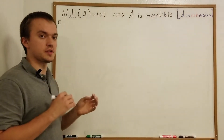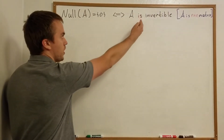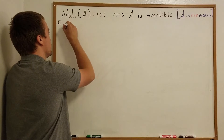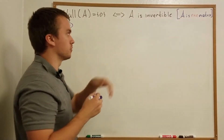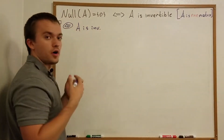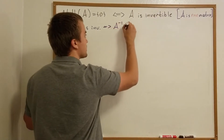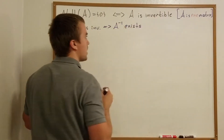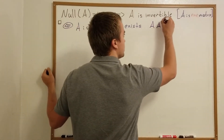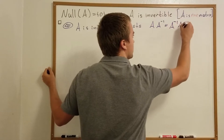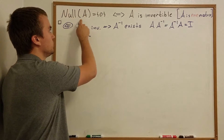Which direction do you think is easier? I think that direction is going to be easier, so we're going to go from right to the left. Let's first try to prove this direction. I know that the matrix is invertible — in other words, A inverse exists, and if it exists it means that A times A inverse or A inverse times A is the identity. My goal is to show that the null space of A is zero.